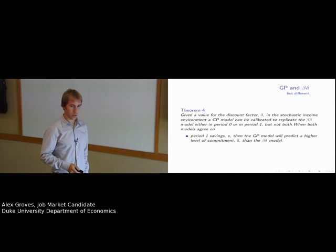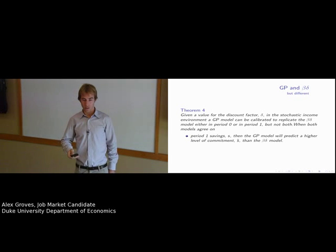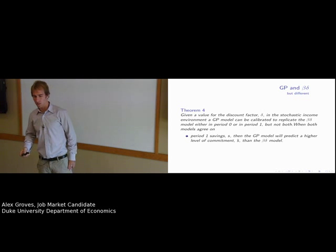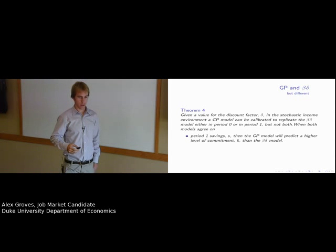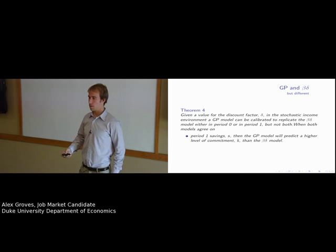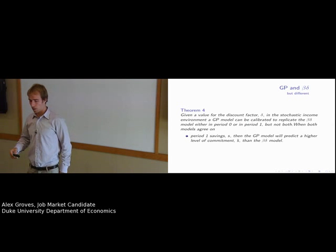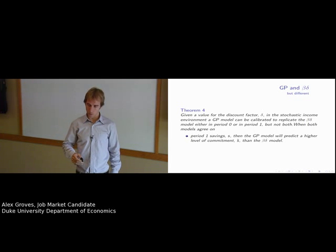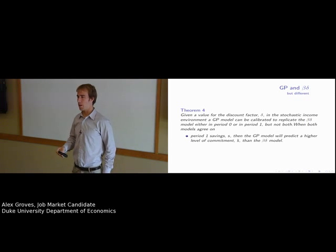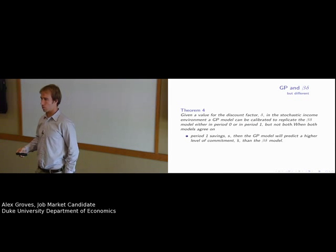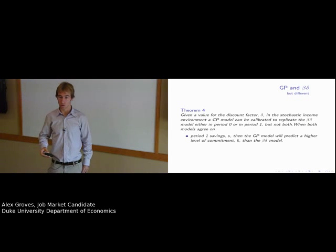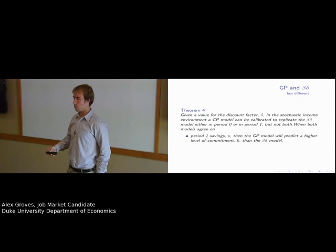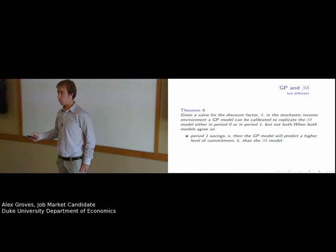The main difference between these two models that's driving this difference is that the Gulen-Pessendorfer model still derives an additional benefit from commitment that the beta-delta model doesn't through the decrease in the cost of self-control. Even when the mandatory minimum deposit is not binding, it still decreases the level of self-control or the cost of self-control by decreasing the most tempting alternative, which would be to consume your entire available wealth.